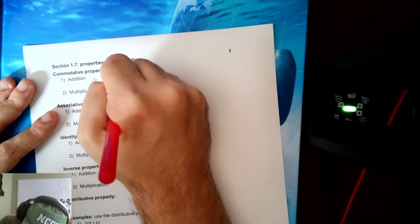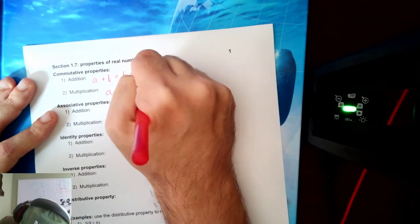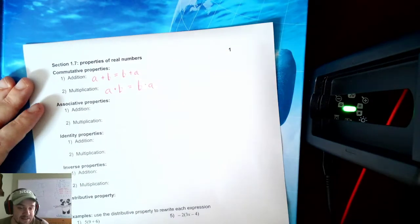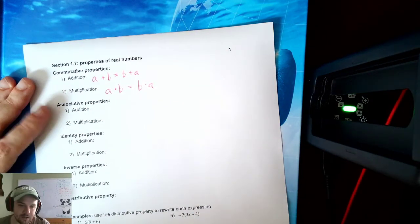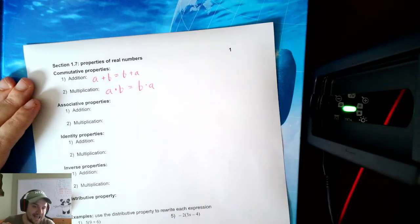Same for multiplication. A times b is the same as b times a. Same thing, 3 times 5 is the same as 5 times 3. That's not true for subtract or divide. Only for add and multiply.